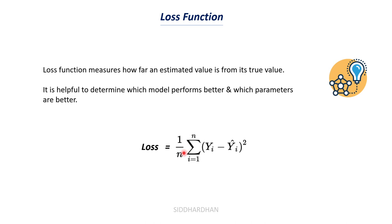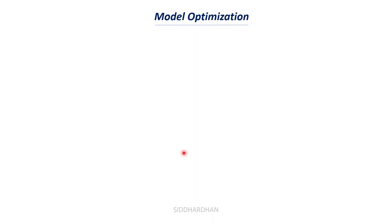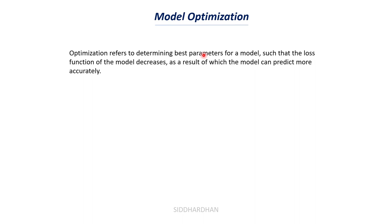Now let's understand the purpose of gradient descent. The purpose of gradient descent is model optimization — to derive a more optimized model that gives accurate results. Optimization refers to determining the best parameters for a model such that the loss function decreases, as a result of which the model can predict more accurately. Our main goal is to find these best parameters and decrease the loss function.